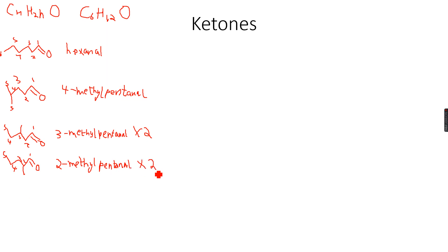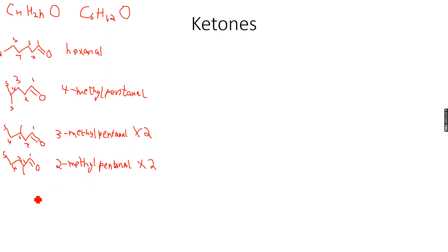So this will be multiplied by two. Till now we have made one, two, three, four, five, and six isomers, and we are still on the aldehyde — we have not yet moved to the ketone.